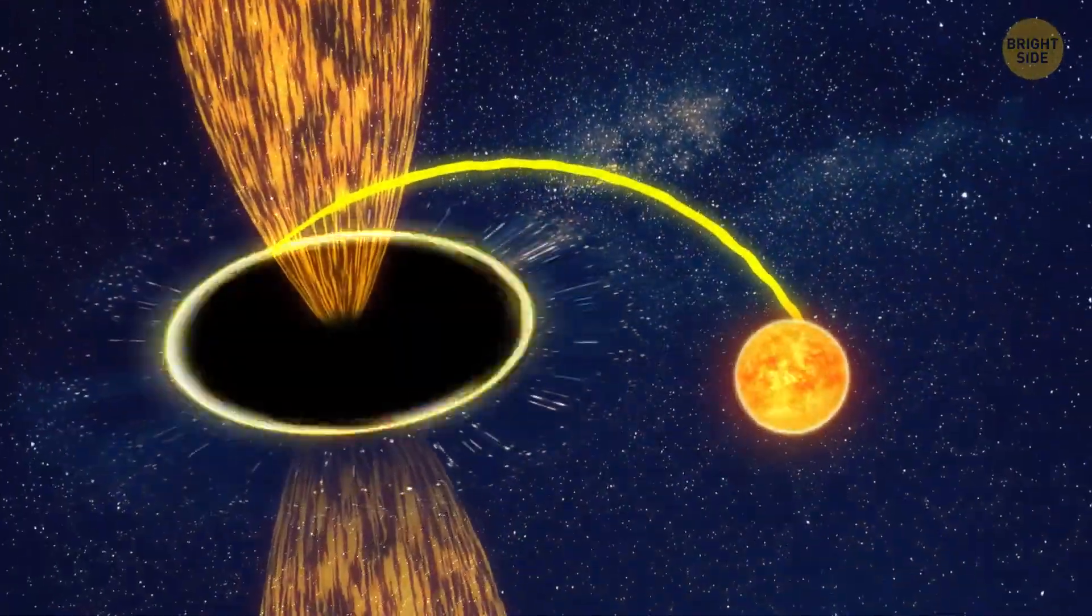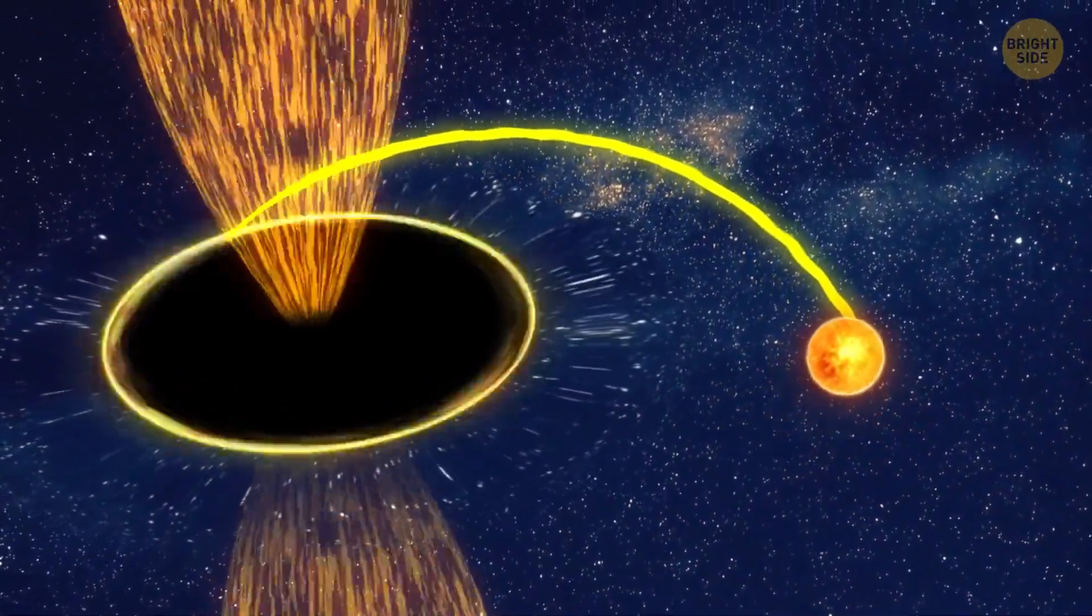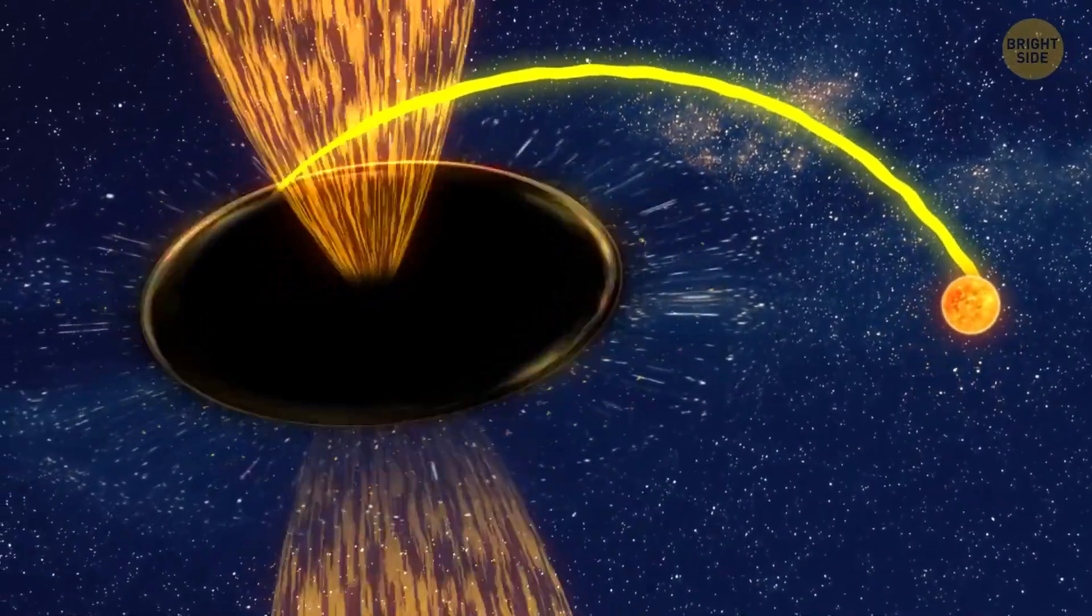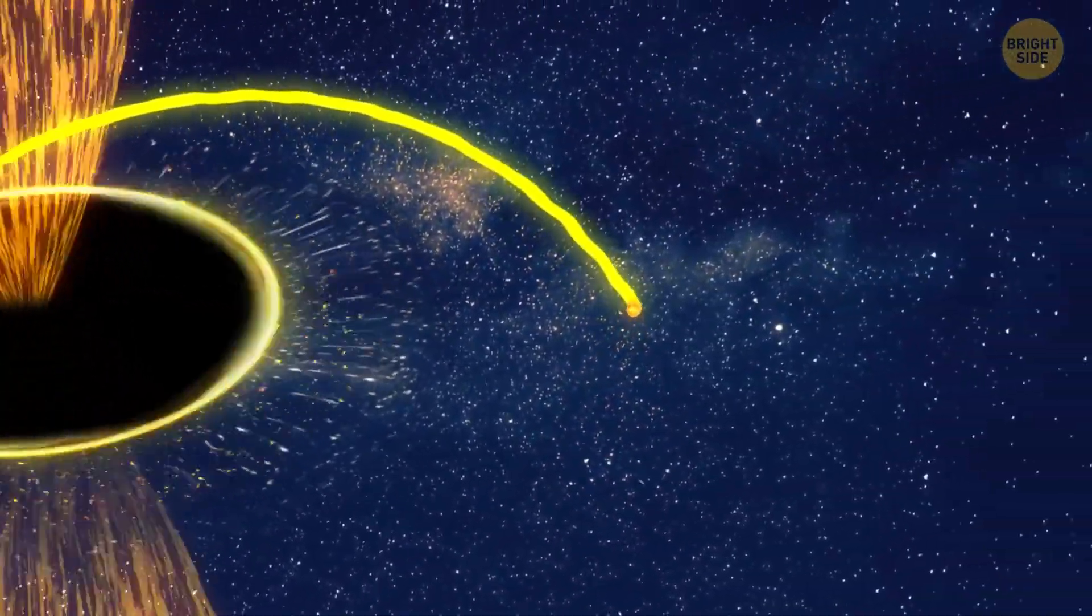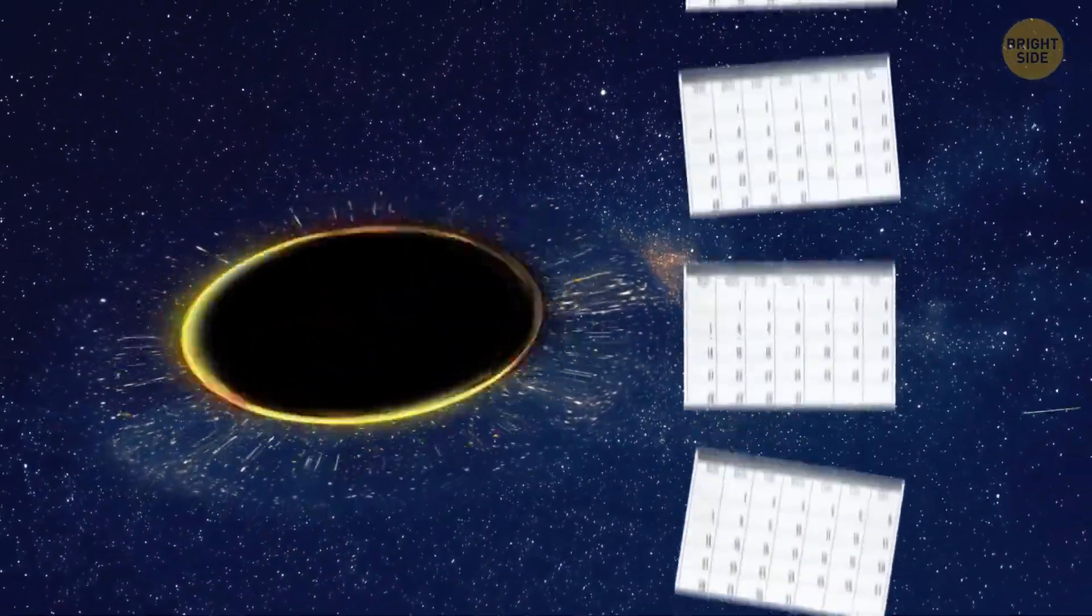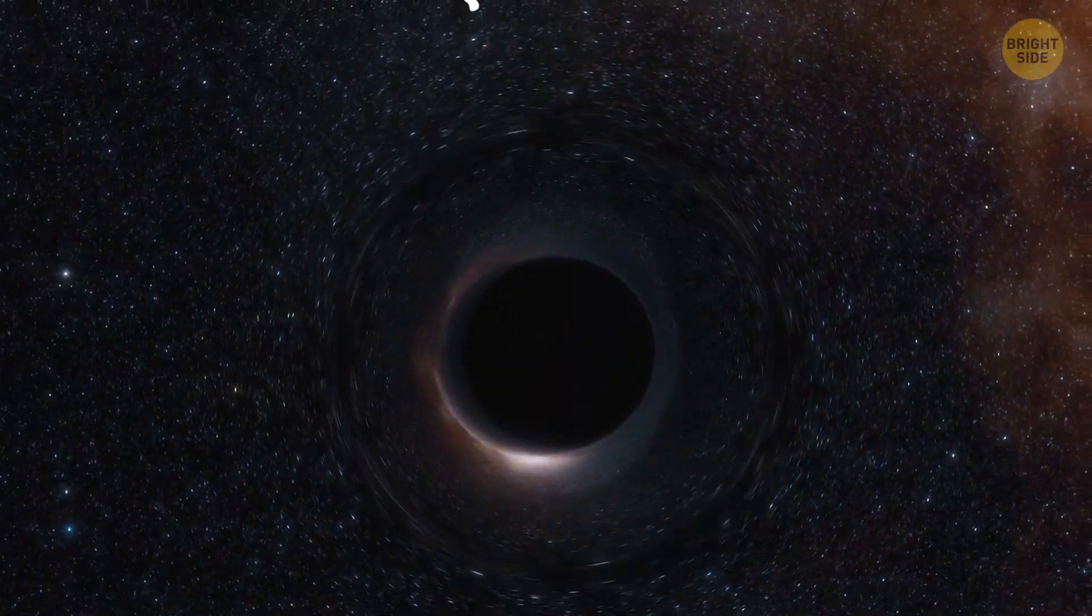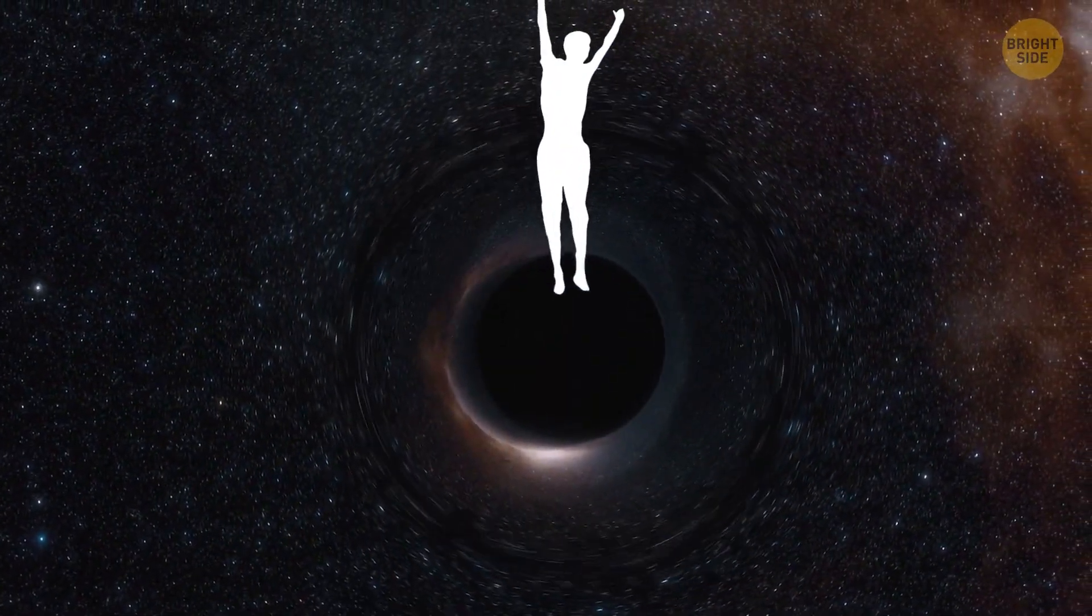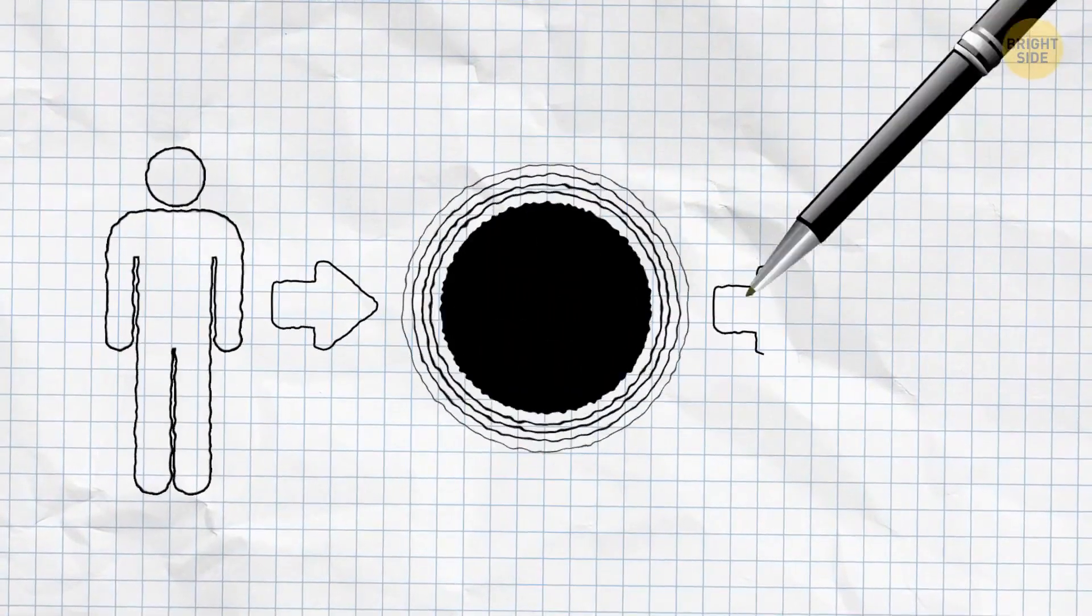When the process of spaghettification is completed, about half of the star's weight has been thrown into outer space as dust and glowing particles. The other half was entirely absorbed by the black hole. The scientists observed this process for almost 6 months. But what would be more interesting is to dive into a black hole yourself. Well, we can't do that yet, but we can simulate this process.